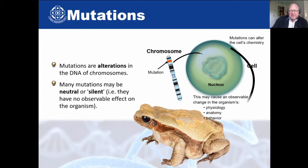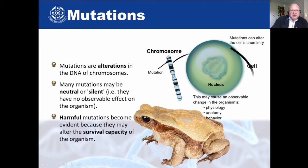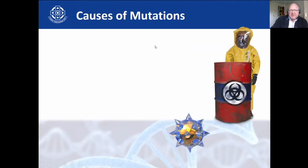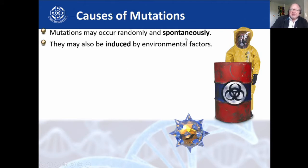Two types of mutations: those we can see and the silent ones. You also have harmful mutations, which obviously are not good for the organism's survival. Now, some things cause mutations — mutations can actually happen spontaneously.